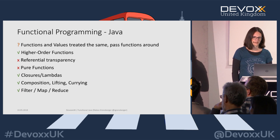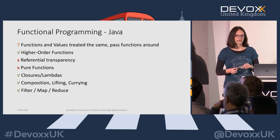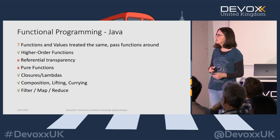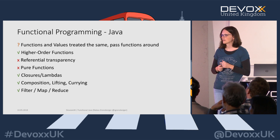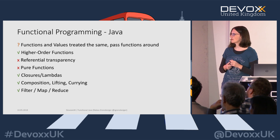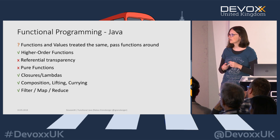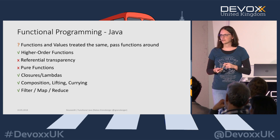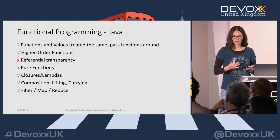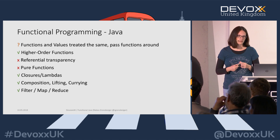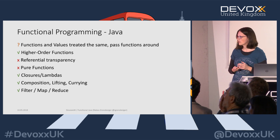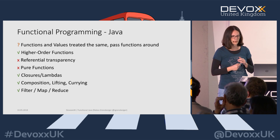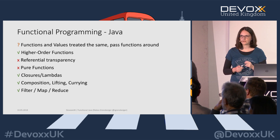To recap functional programming in Java: functions and values are treated the same — kind of, it's still types we're passing around but it looks like we're doing it. You can build higher-order functions by returning a function from a method or composing them. Referential transparency is not guaranteed — you can program that way if you want, and we'll see a library later that makes it easier. Pure functions — we don't have guaranteed referential transparency so we can't have true pure functions. Closures and lambdas kind of work, composition and currying work, and filter/map/reduce is on streams.